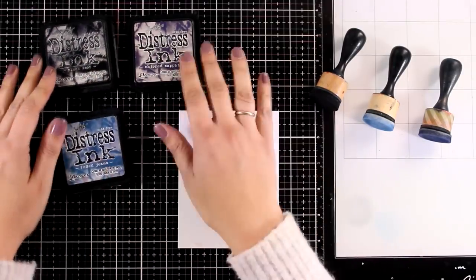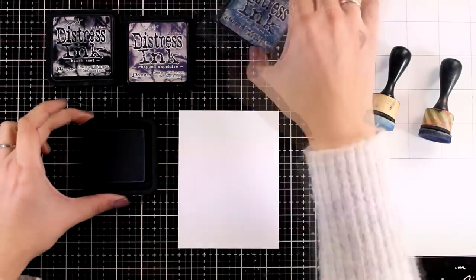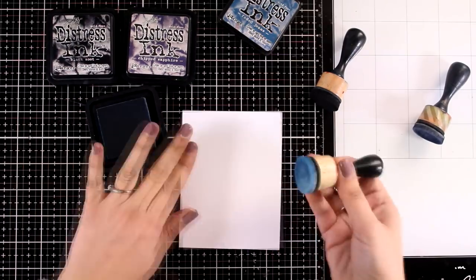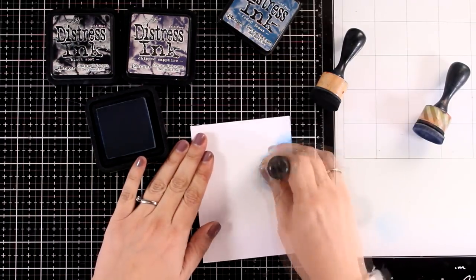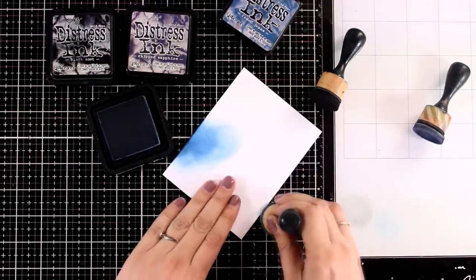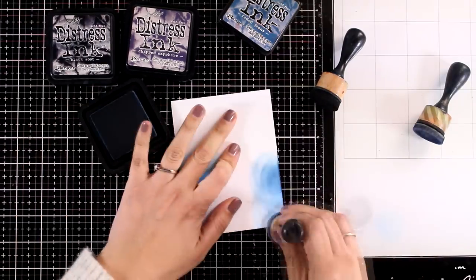For my first background I'm starting with my good old distress inks, these are not the oxides, and I'm going to use my good old blending tools. You will see that I'm not going to have a good blending in the beginning - you will see lots of splotches and circles of the sponges, but this is not a problem at all. This is a technique where you add layers and layers of color on top so everything is going to cover it up completely.